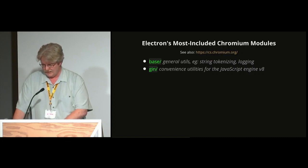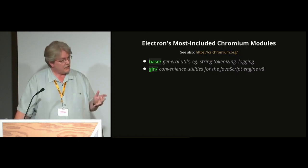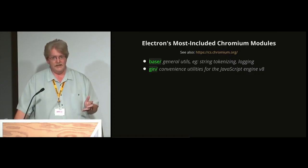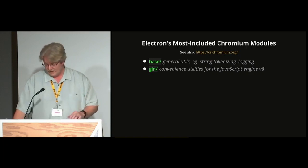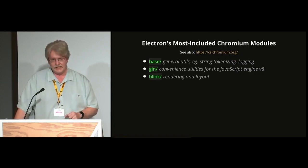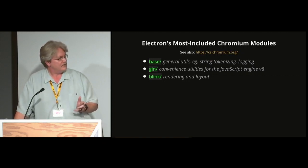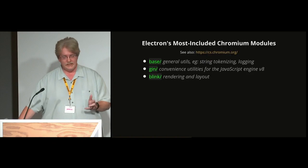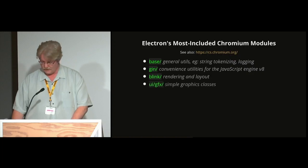Next up is `gin`, which is a lot of convenience utilities for dealing with V8. It's more complex but still a good starter candidate if you want to learn more about V8 — it's only a couple thousand lines. Then `blink`, Chrome's famous rendering and layout engine which does a lot of heavy lifting, but although we include it a lot, most of the time it's just to pick up structure or class definitions. Understanding blink is useful but that's probably not where you'll spend most of your time.